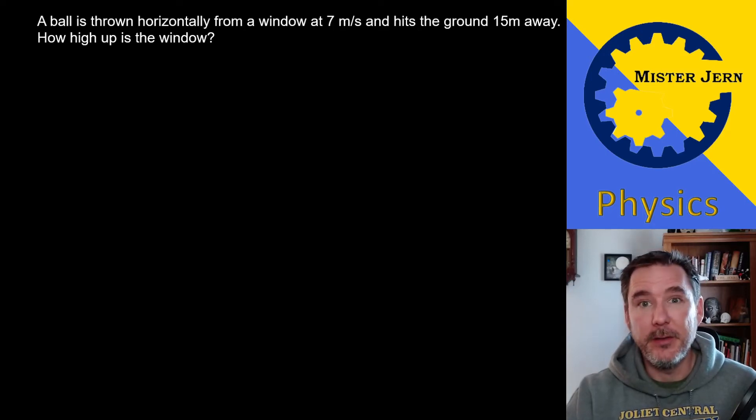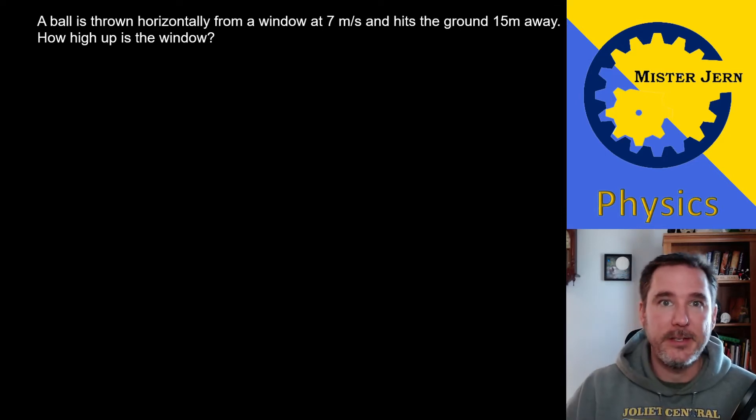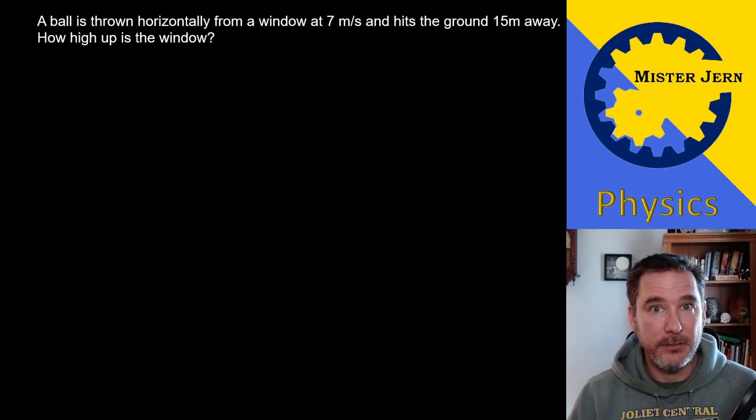This is Mr. Jordan and I'm going to show you another example of a horizontally launched projectile. By horizontally launched, I just mean that when it is thrown there is no y component to the velocity. In other words, it's thrown completely horizontally and so initial velocity in the y direction will be zero.